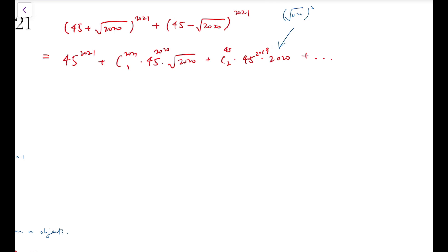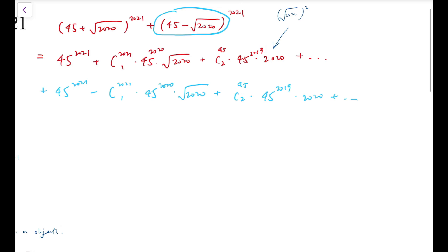Now for the other part, this time it's minus 2021C1 times 45^2020 times √2020, plus 2021C2. This time it's still a plus because the minus signs cancel out, and so on. So just like what we have done on 2 + √3, the odd powers of √2020 cancel out, and so what remains are integers.